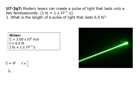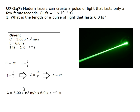The original equations are: c equals lambda times f, and f equals 1 over t, so c equals lambda over t. Therefore, lambda equals c times t. Lambda equals 3.00 times 10 to the 8th m/s times 6.0 times 10 to the negative 15 s, which gives lambda equals 1.8 times 10 to the negative 6 meters.